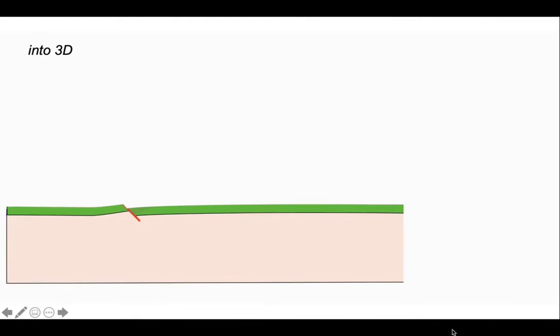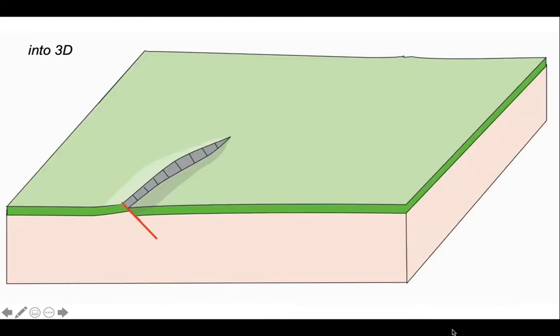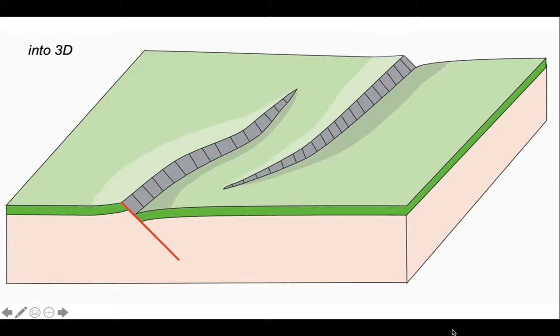So much for profiles - let's move into three dimensions. So here we have a fault tipping out into our block diagram with a throw seen in the profile edge of the block. So this is the lateral tip. Here comes another fault with its own lateral tip growing. The two faults trying to grow towards each other, just missing each other.